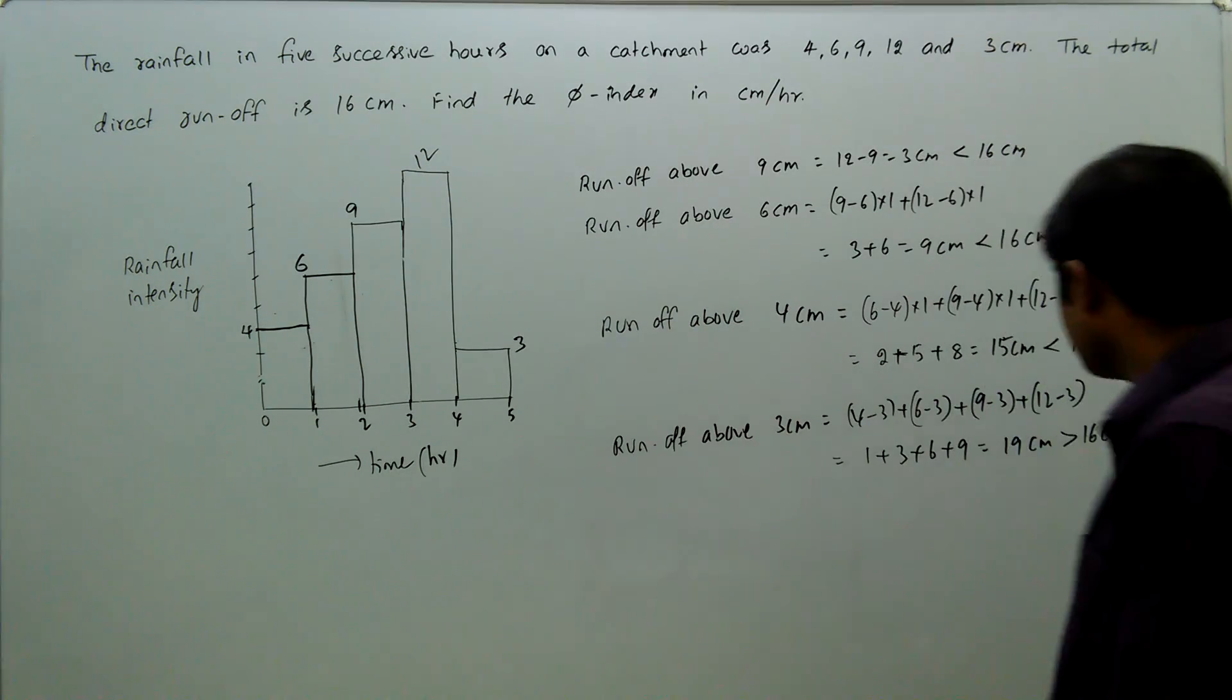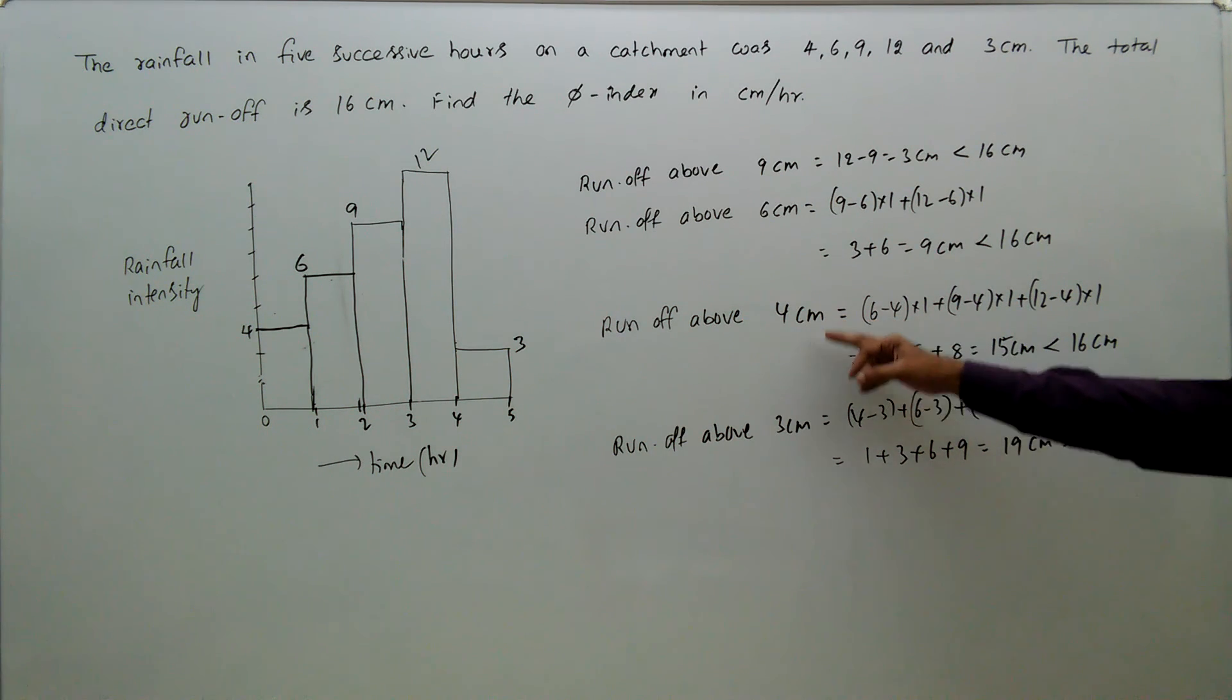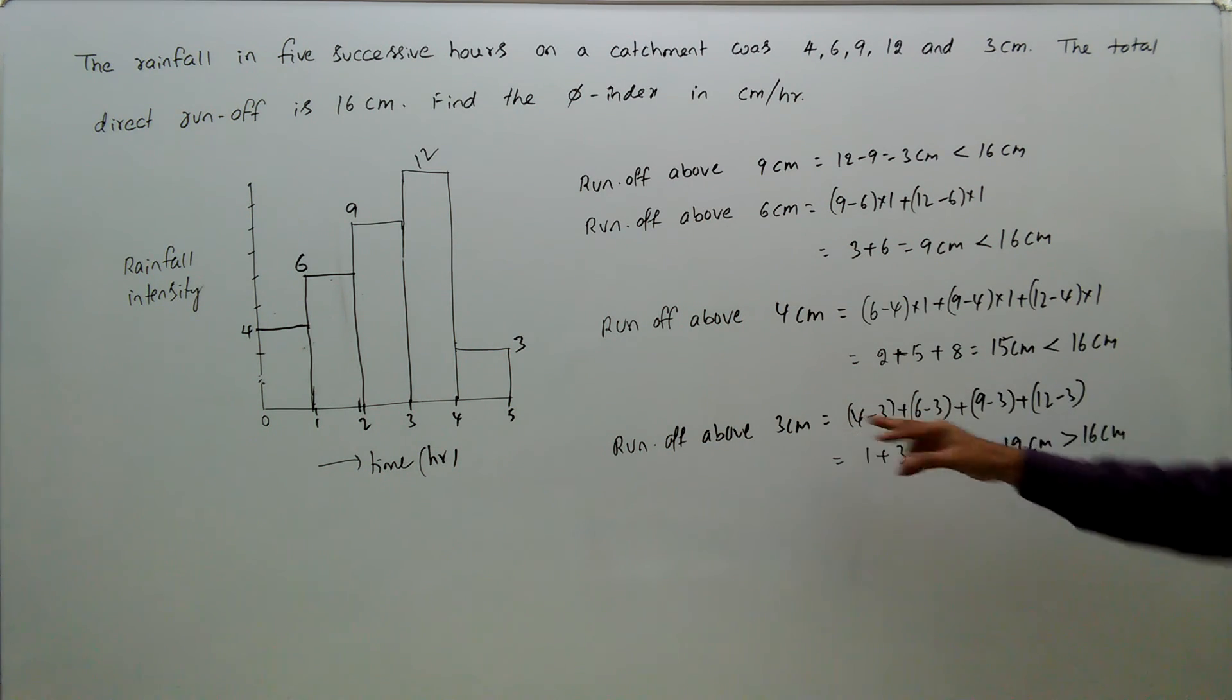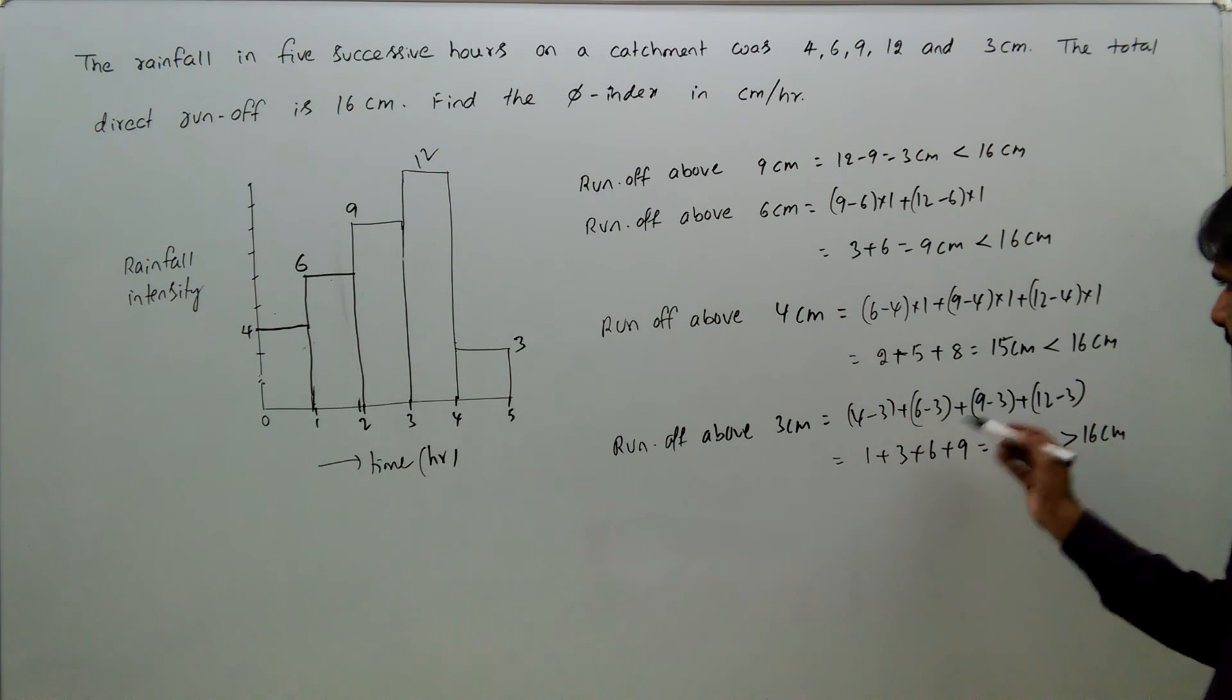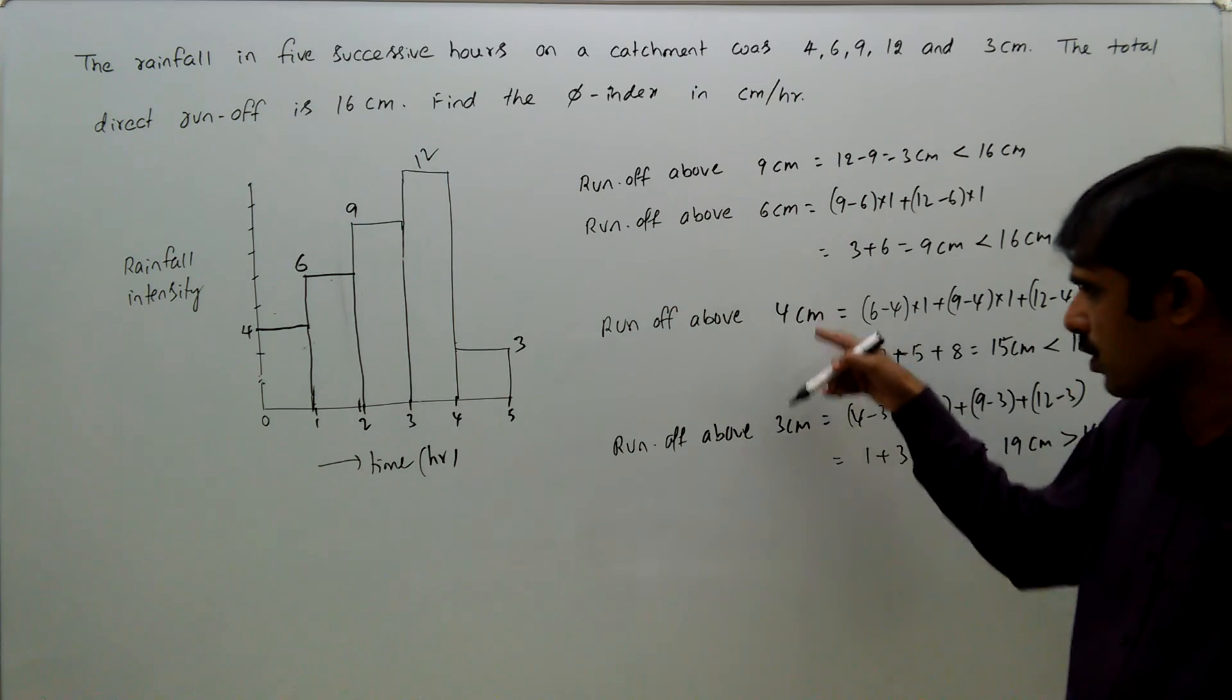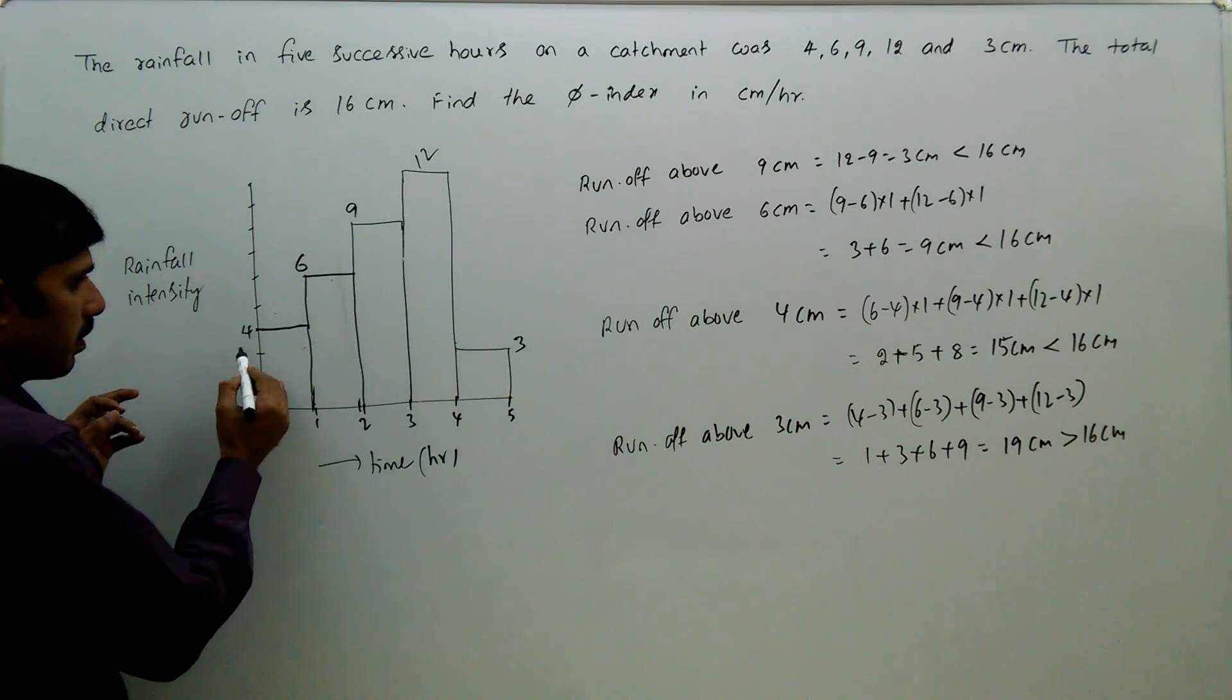So φ index must be within 4 centimeter to 3 centimeter. Because if you take 4 above, the runoff is 15 only. If you take 3 above, it is 19. So 16 is in between. That means φ index is below 4 centimeter and above 3 centimeter.